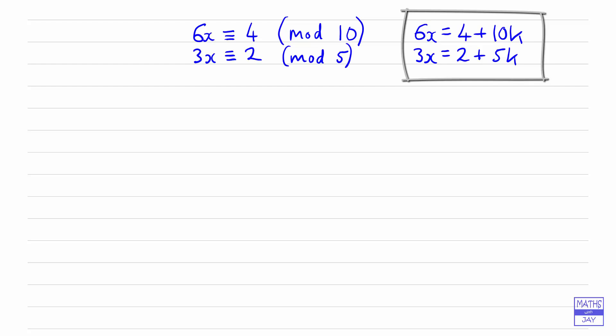So what we can do now is simply try values for x. So let's try x equals 1. So if x is 1, then we've got 3 times 1, and that's 3. Well, that's just congruent to 3 mod 5, so that's not what we want.